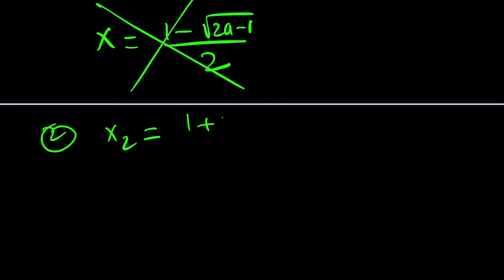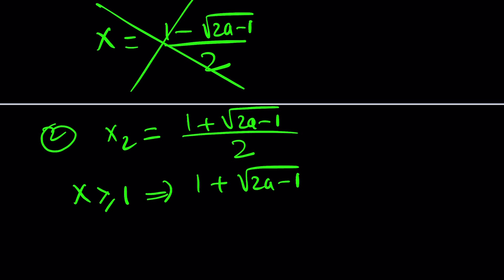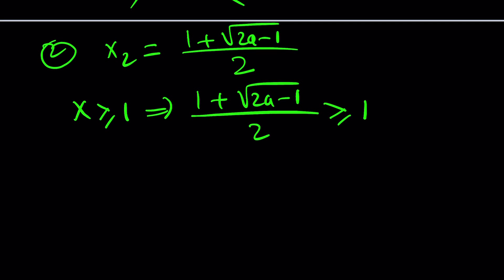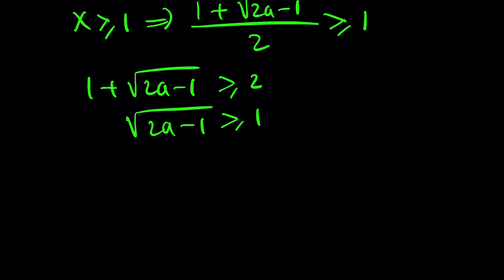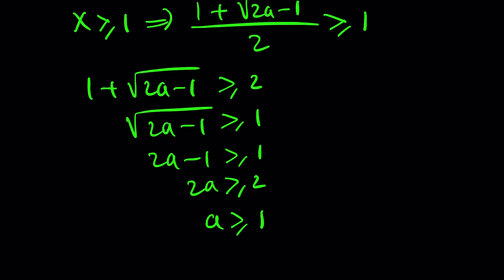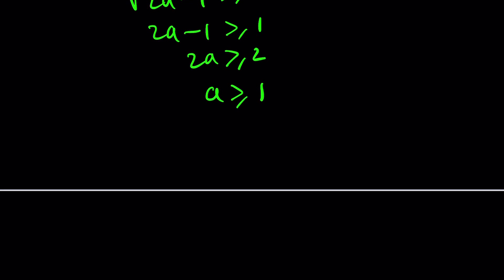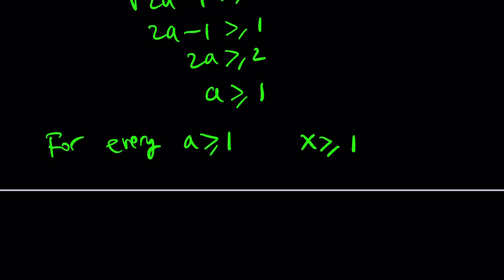Let's test the plus solution: x₂ = (1 + √(2a−1)) / 2. We want this to be greater than or equal to 1. Multiplying both sides by 2, subtracting 1, and squaring both sides — since a ≥ 1 means a is positive — we find that this implies a must be greater than or equal to 1. So for every a value satisfying a ≥ 1, we have x ≥ 1. The other solution already failed, so we only keep this one.